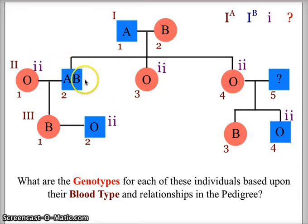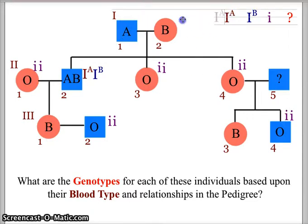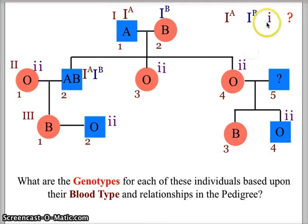We know that the individual with AB blood is codominant for AB. So the father in the first generation has to have an I-A allele, and the mother in the first generation has to have an I-B allele. That's how their son has I-A, I-B — the AB blood type. But the original parents also have two daughters with O blood, so we know that both of those parents have to have the little i allele as well.